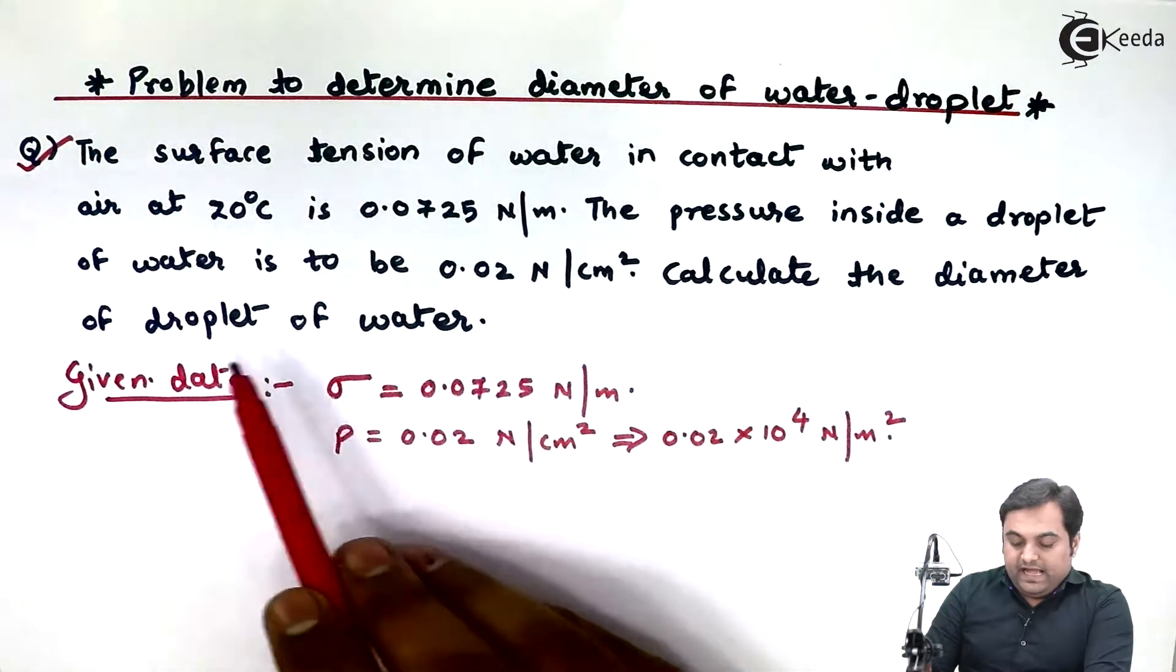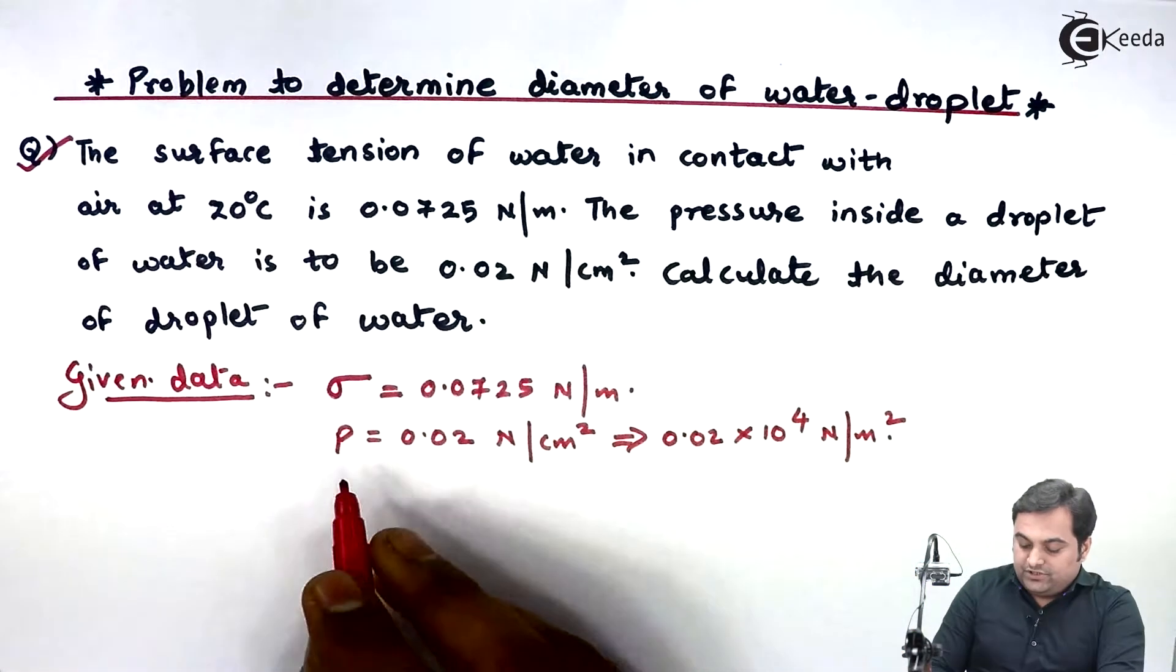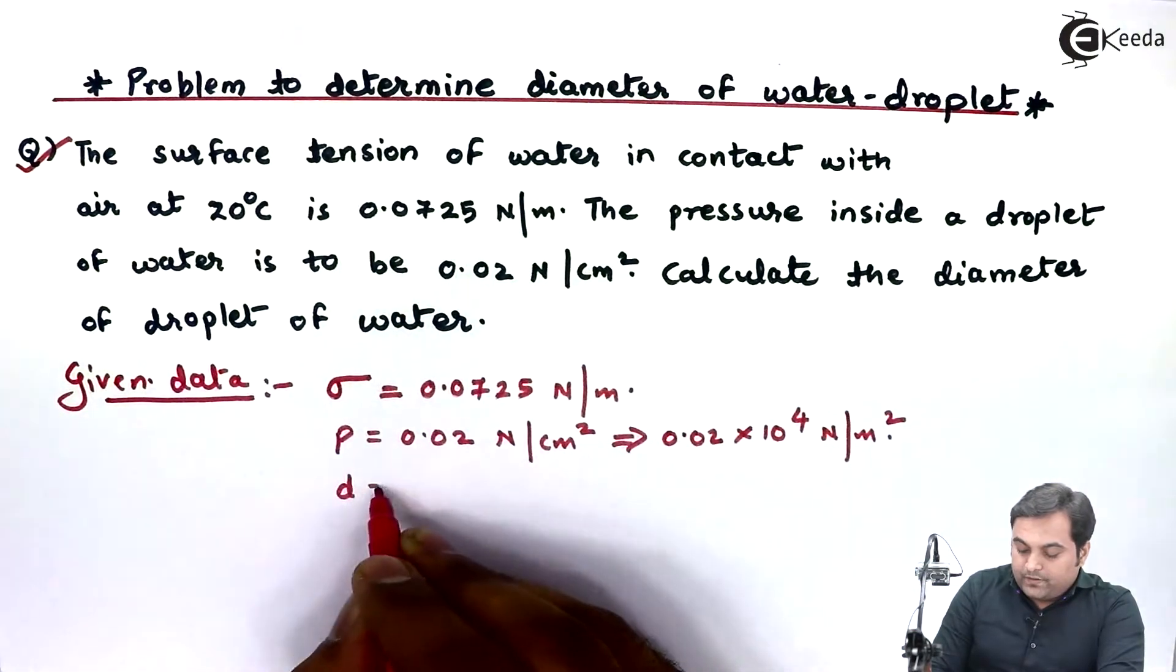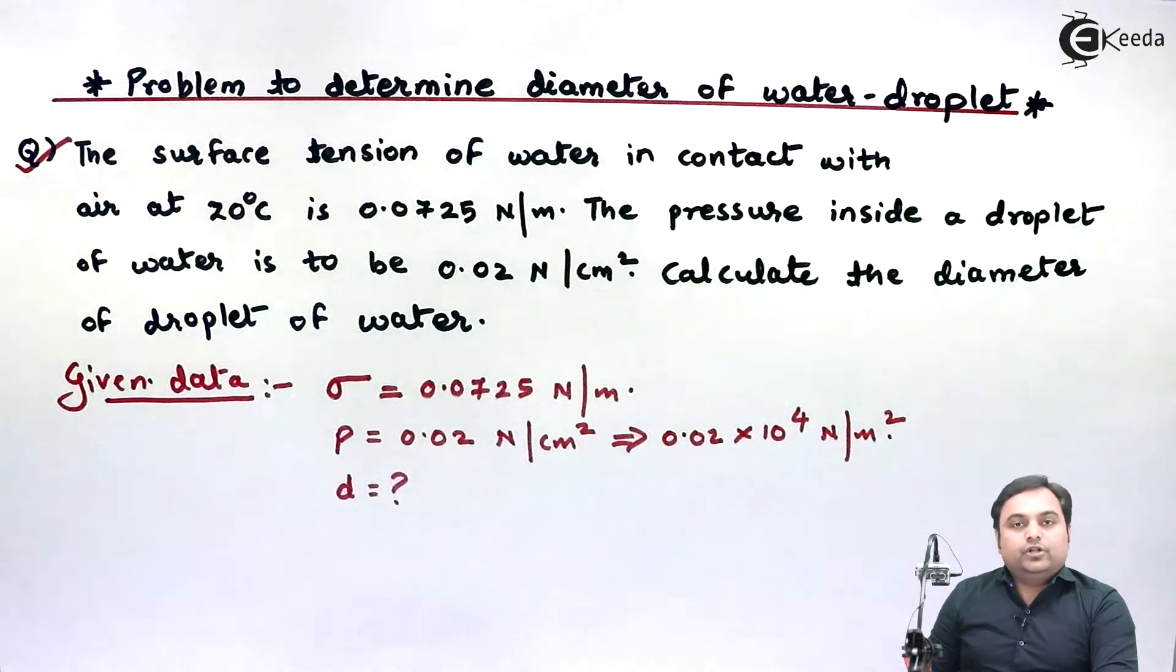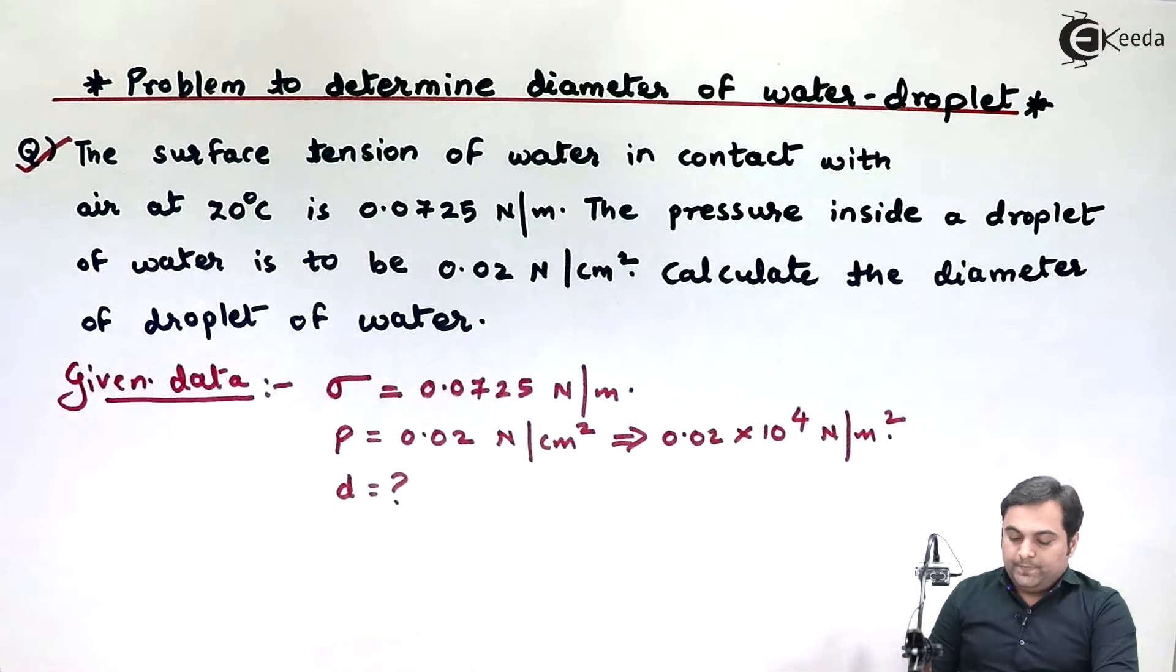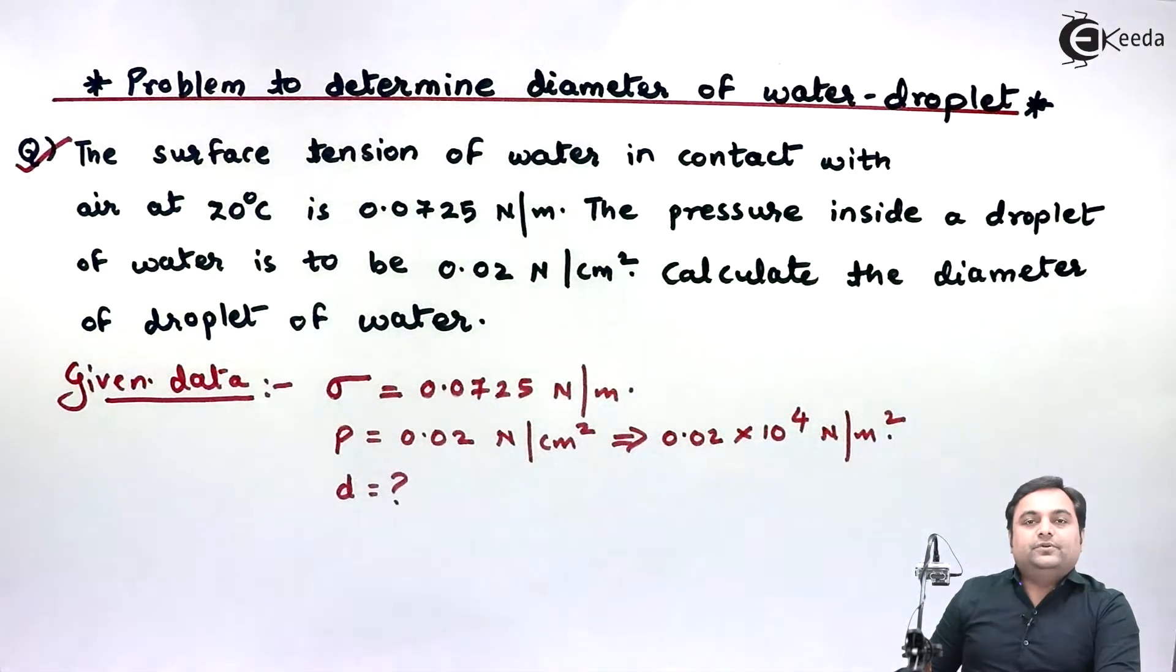Now, calculate the diameter of droplet of water. This is the question here - we have to calculate how much is the diameter of the droplet of water. Now with this much data available, let us try to get the solution for this problem.